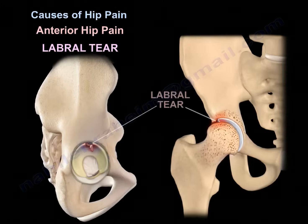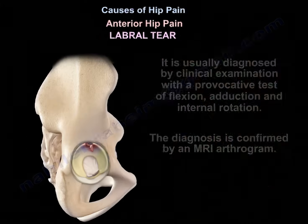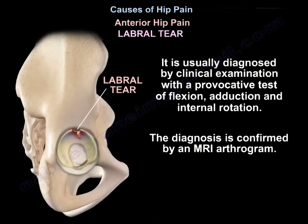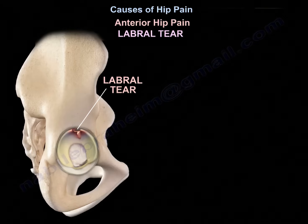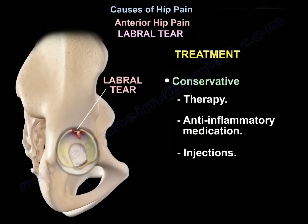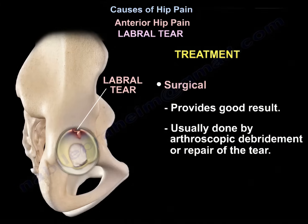Anterior hip pain can also be caused by a labral tear. It is usually diagnosed by clinical exam with a provocative test of flexion, adduction, and internal rotation, and confirmed by an MRI arthrogram. Treatment can be conservative with therapy, anti-inflammatory medications, or injections. Surgical treatment provides good results, usually done by arthroscopic debridement or repair of the tear.